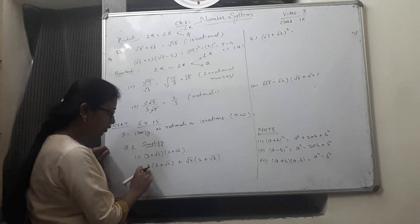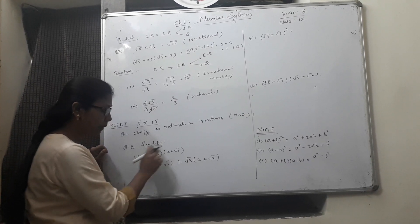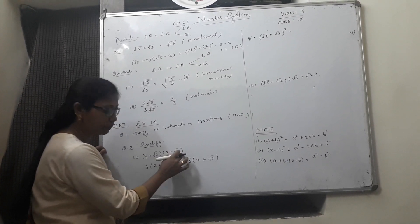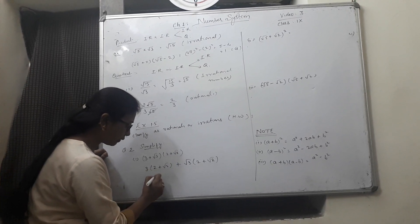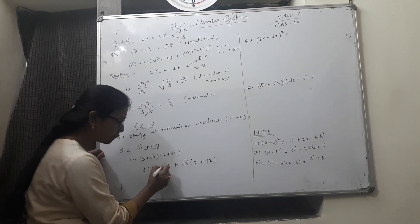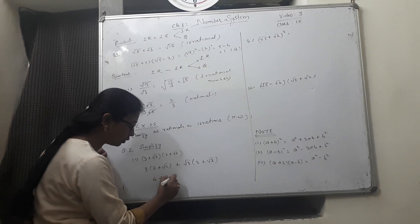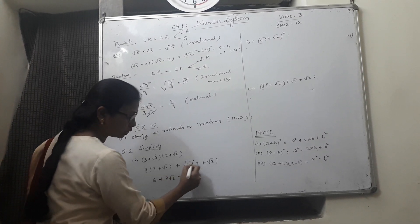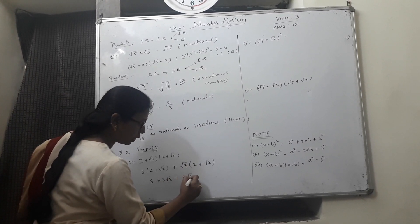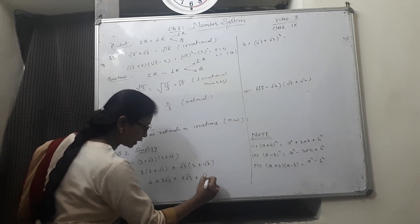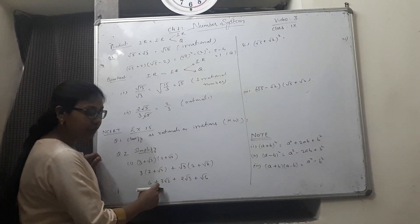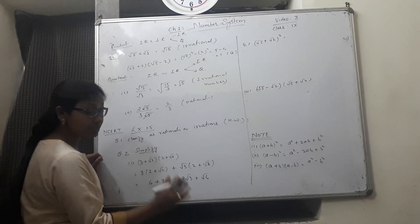3 into first term multiply by both. Then second term multiply by both. 3 into 2 gives you 6. Again 3 into root 2 gives you 3 root 2 plus root 3 into 2 gives you 2 root 3 plus root 3 root 2 gives you root 6. No like terms. So your answer is this.